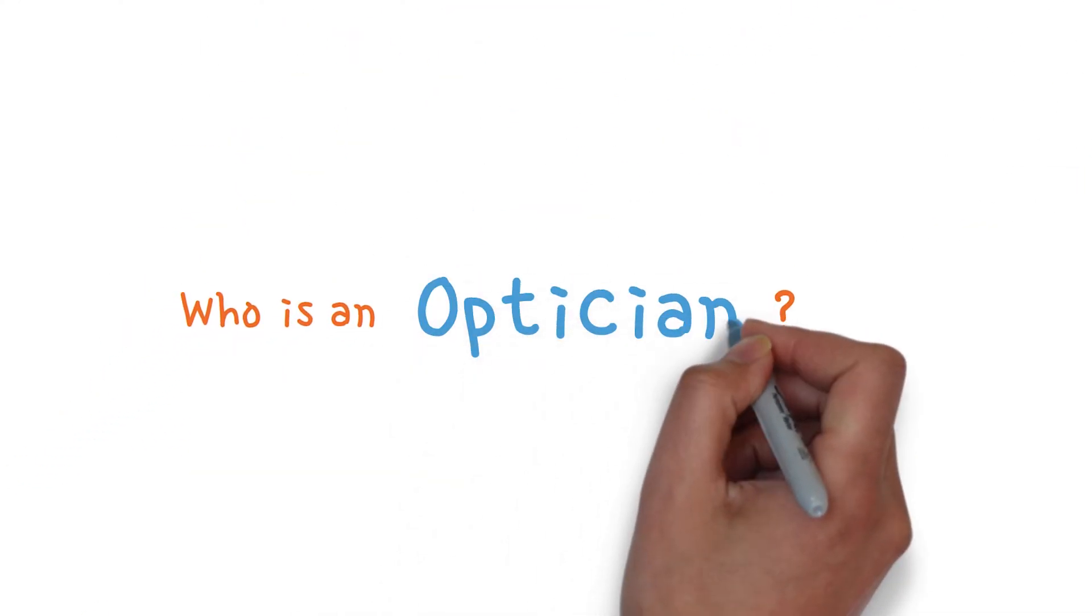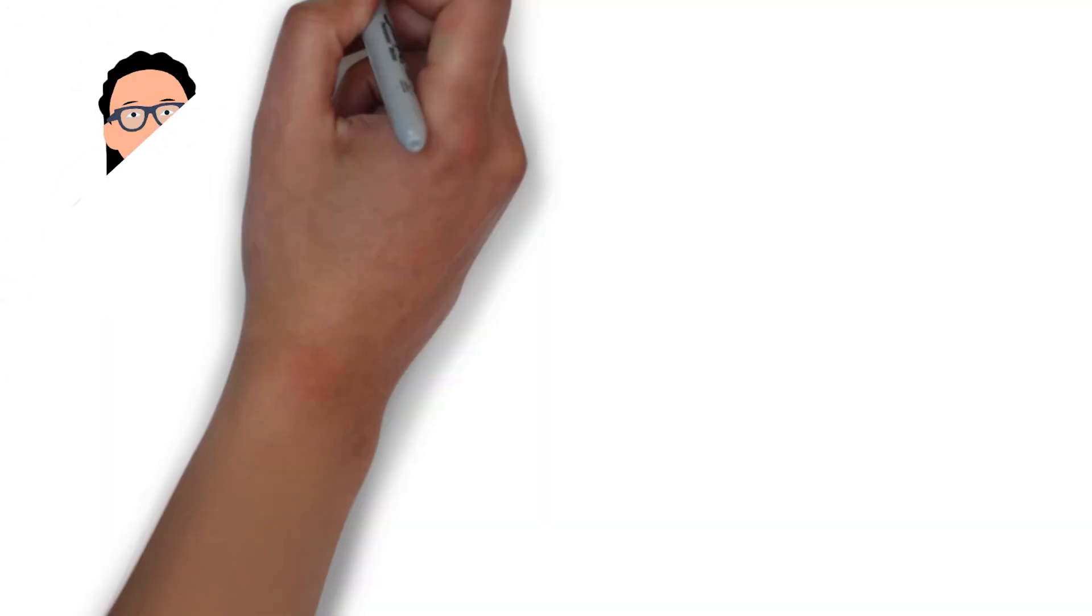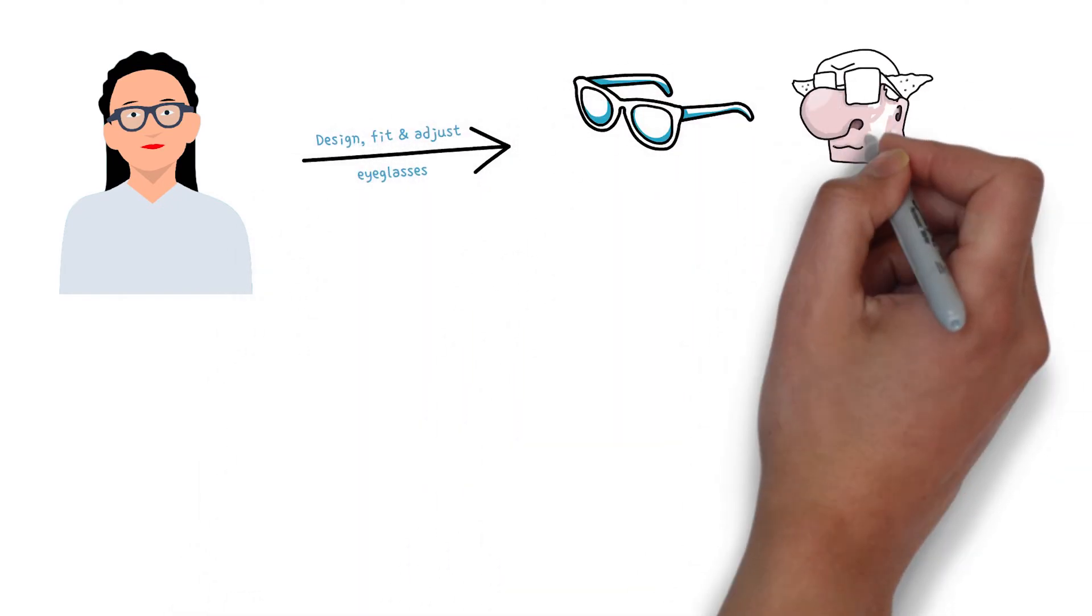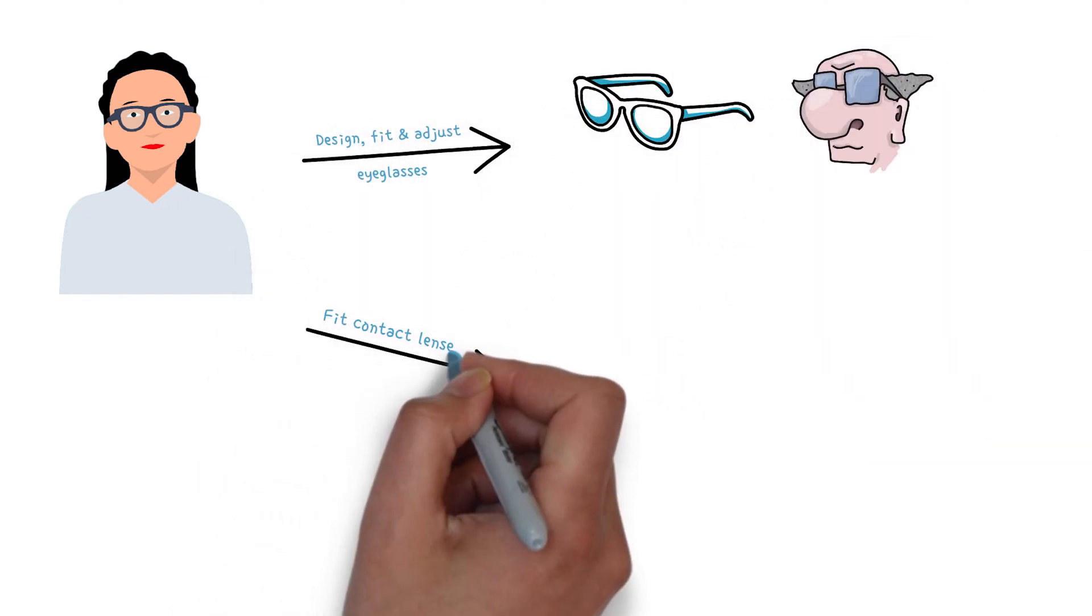Who is an optician? Opticians are technicians trained to design, fit, and adjust eyeglass lenses and frames, contact lenses, and other vision correction devices.